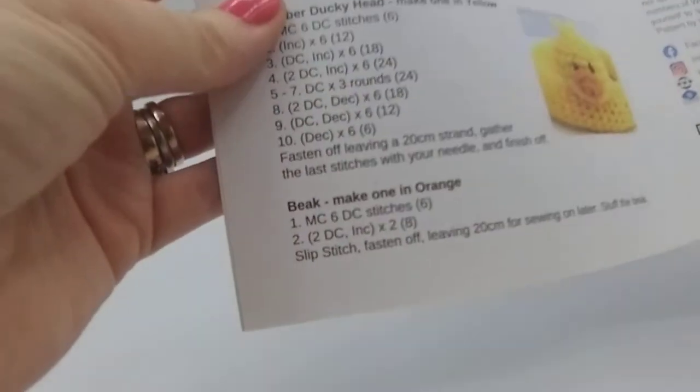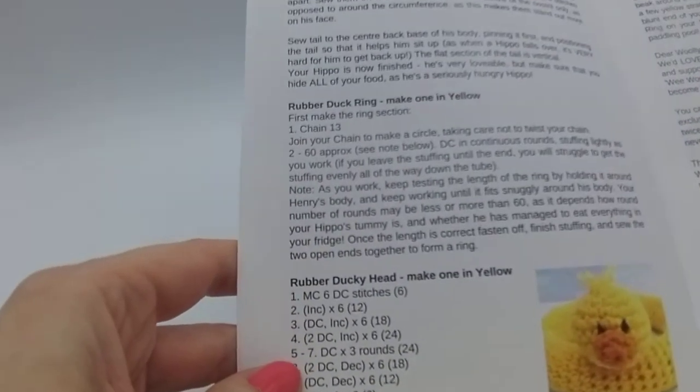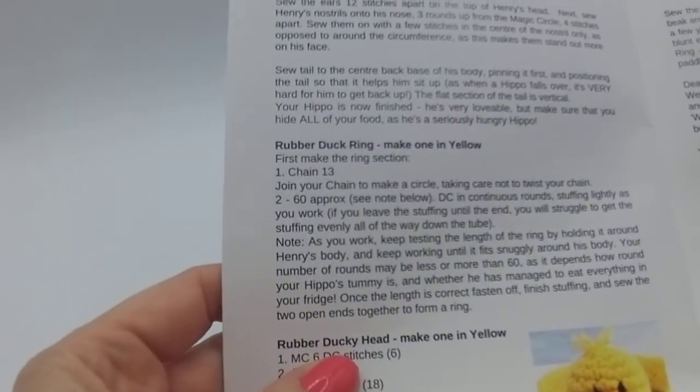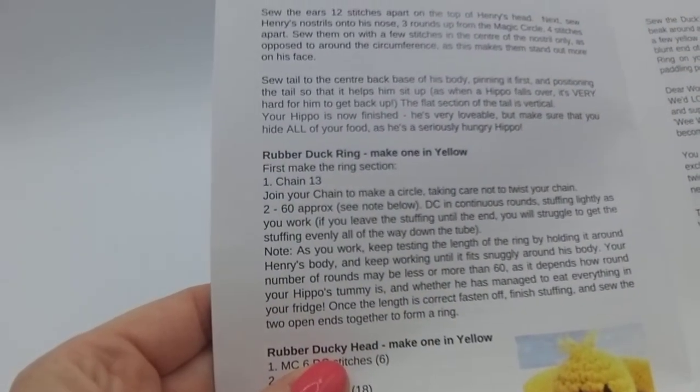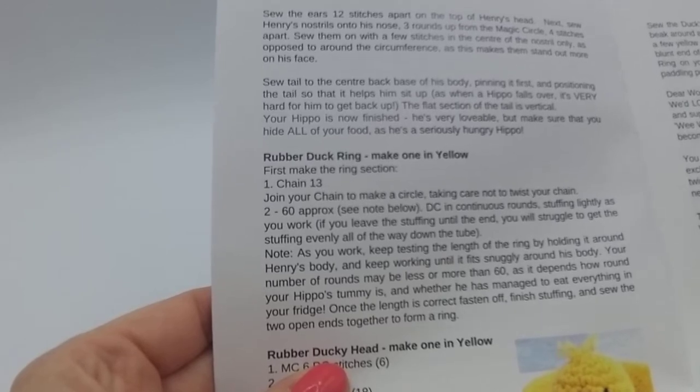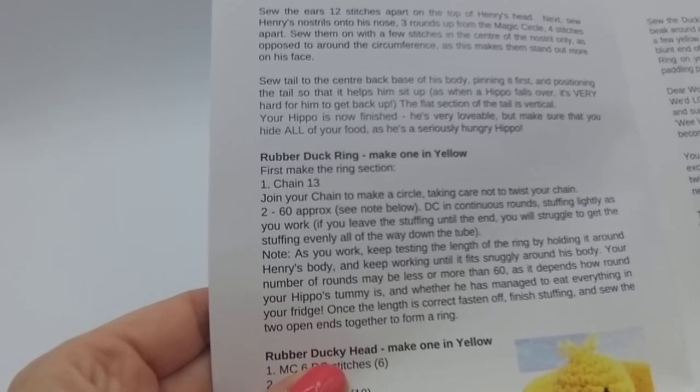With most of our patterns we start with the magic circle, but for this we're actually going to start with a chain which is quite different. So we'll be taking you through how to do that step by step. Our instructions: rubber duck ring, make one in yellow or any color that you fancy. Firstly we'll be making the ring section.